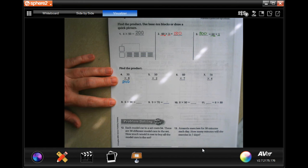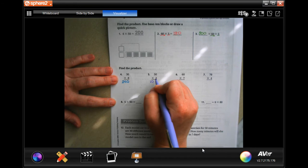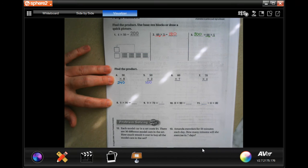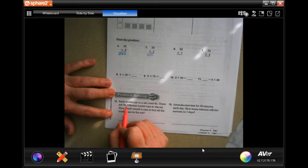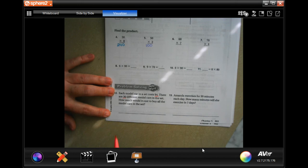Eight times three is 24, and we're going to attach that zero on. Two times five is 10, and we still have to attach that zero on. Okay, you guys go ahead and try that through number 11. Each model car set costs four dollars, there are 30 different model cars.